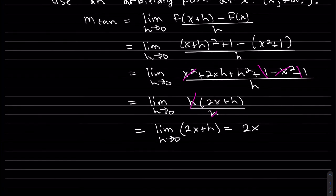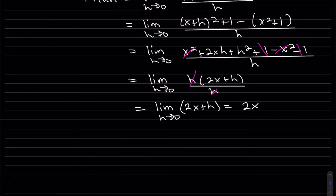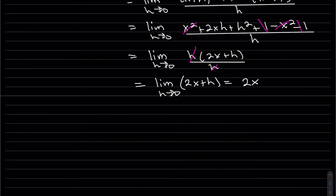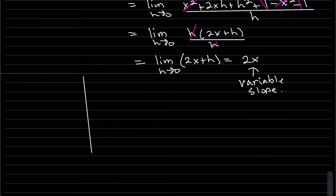Plugging in h equals zero gives us 2x. We plugged in a variable point, so we get a variable answer. The reason is simple: the tangent line at every different point is different, so it's a variable slope. Let's draw out what that means — it's a variable slope for this function.